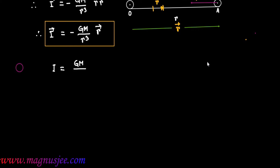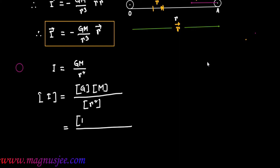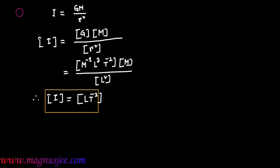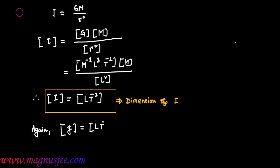We know the expression I = GM / R². The dimension of I equals the dimension of G times dimension of M divided by dimension of R squared. The dimension of G is M⁻¹L³T⁻², so dimension of I = M⁻¹L³T⁻² × M / L² = LT⁻².